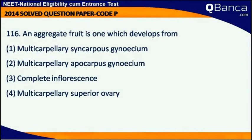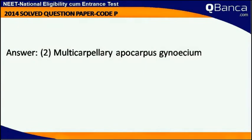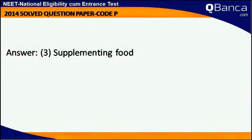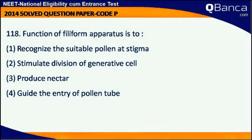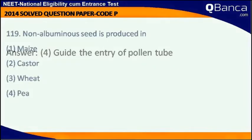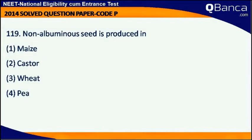An aggregate fruit is one which develops from a multicarpillary apocarpous gynoecium. Pollen tablets are available in the market for supplementing food. The function of the pyloric apparatus is to guide the entry of the pollen tube.